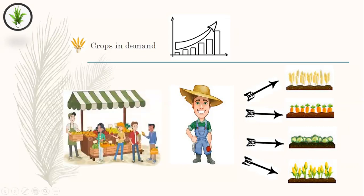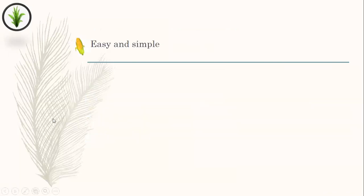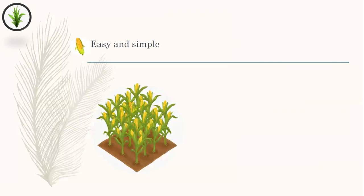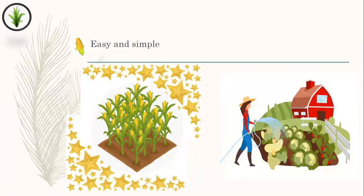The last advantage is easy and simple. It is always easier to do one thing than multiple things at once. Growing a single crop throughout the field is always easier for farmers and simpler to do, rather than growing multiple crops at the same time and in the same farm.